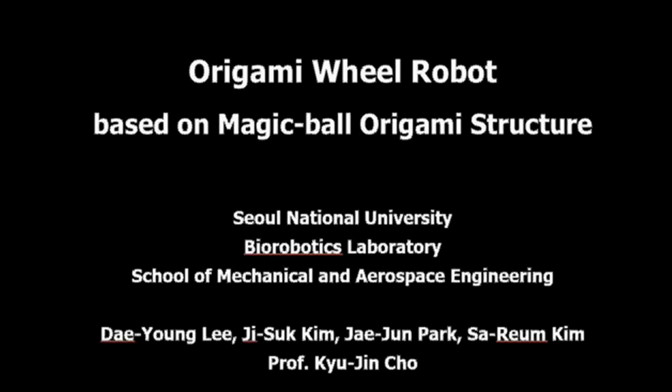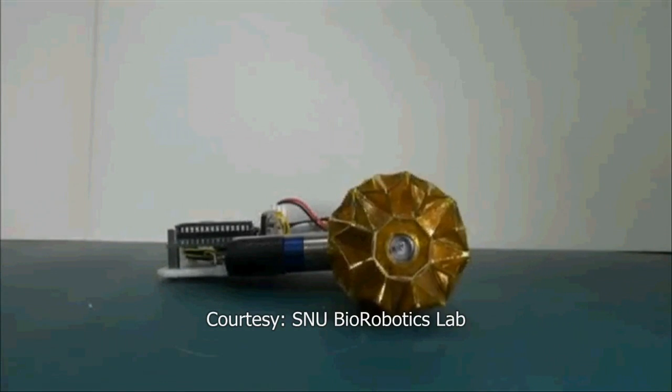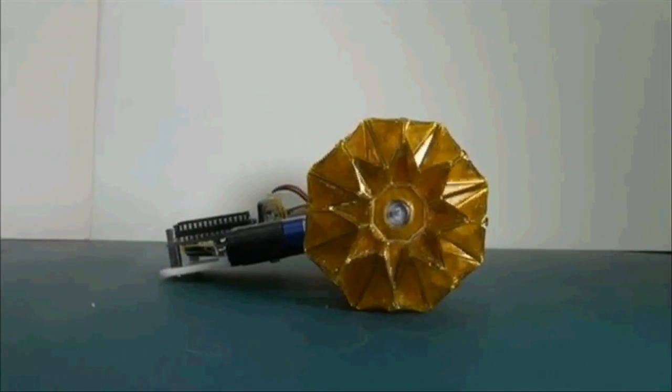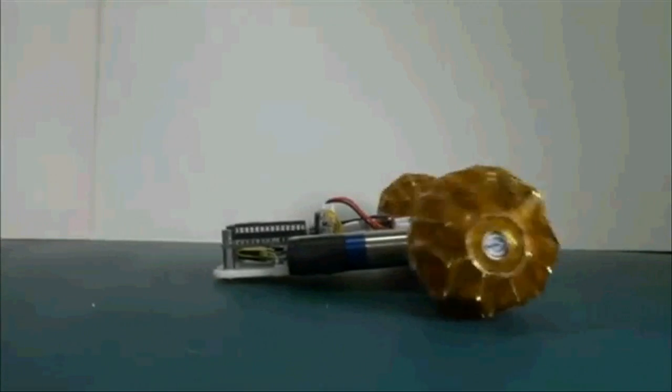Researchers from Seoul National University, South Korea, have designed a robotic wheel based on the origami magic ball pattern, which is a traditional technique used to create folded paper spheres.